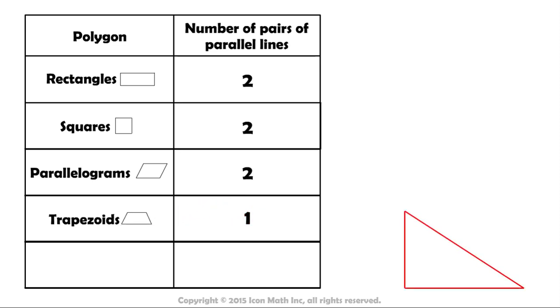What about triangles? How many pairs of parallel lines can we have in a triangle? Actually, triangles don't have any pairs of parallel lines.